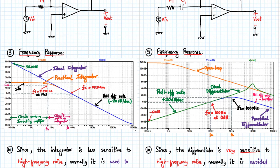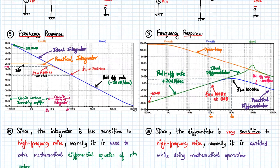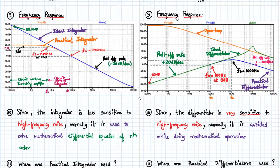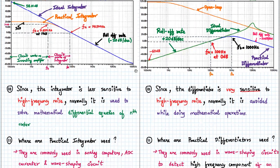Regarding the roll-off rate: in the case of an integrator, the roll-off rate is minus 20 dB per decade. In the case of a differentiator, it is initially plus 20 dB per decade, and then after the frequency f beats it becomes minus 20 dB per decade.